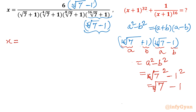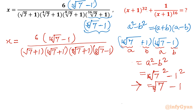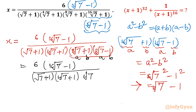So now x = 6(¹⁶√7 − 1) over (√7 + 1)(⁴√7 + 1)(⁸√7 + 1)(⁸√7 − 1). Again I will use the same identity a²−b². You can consider (⁸√7 + 1) as a and (⁸√7 − 1) as b, giving (⁸√7)²−1² = ⁴√7 − 1.